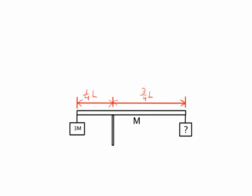Here is our physical setup. We have a beam with an overall length of L and a mass of M. It is sitting on top of a pivot that it can rotate about, and that pivot is a distance of about a quarter L from the left-hand side of the beam. Hanging from the left-hand side is a mass of 3M, and on the right side of the beam we have an object whose mass is unknown to us. The question is: in equilibrium, what is that mass?